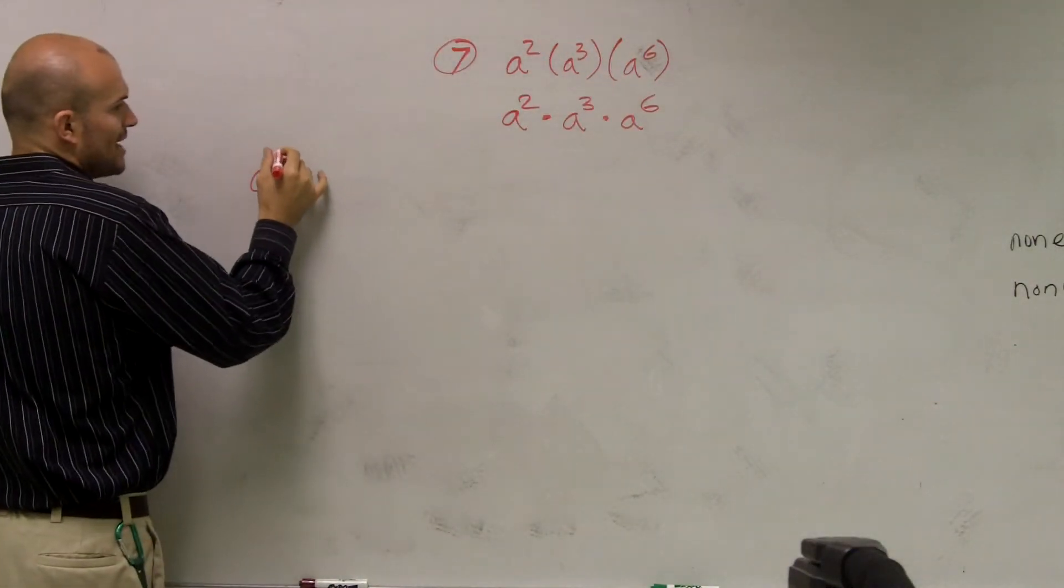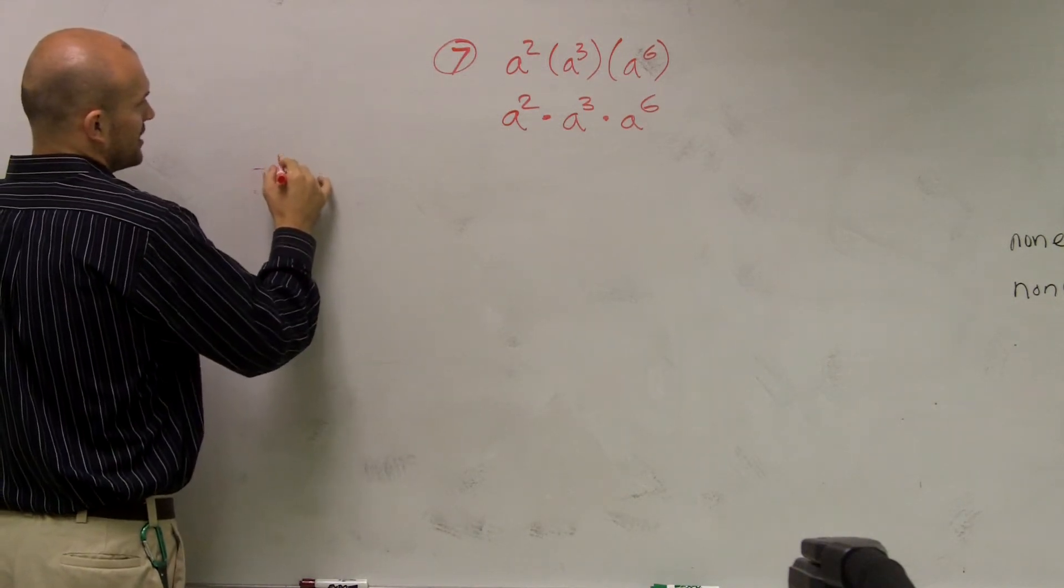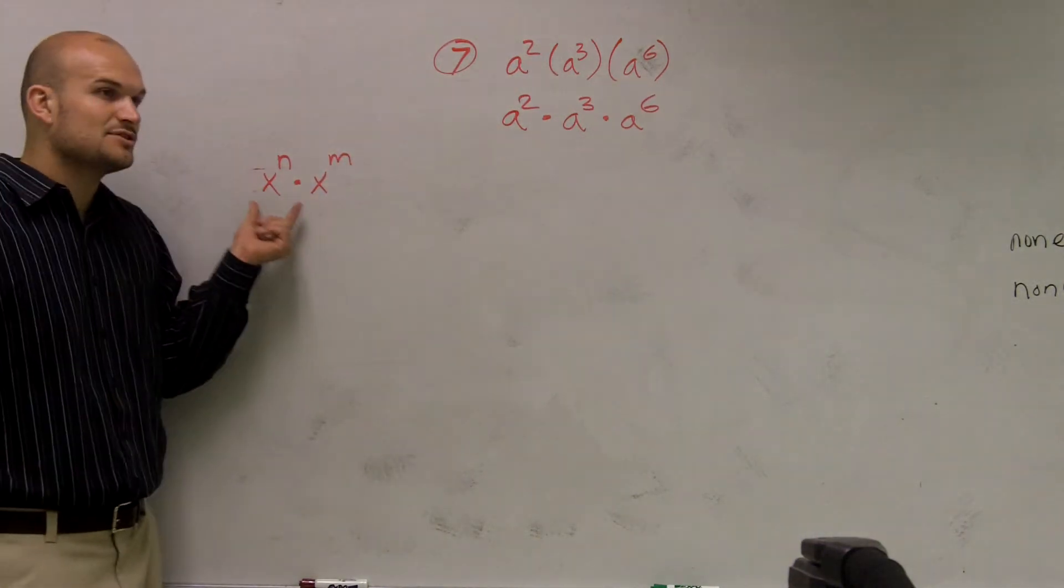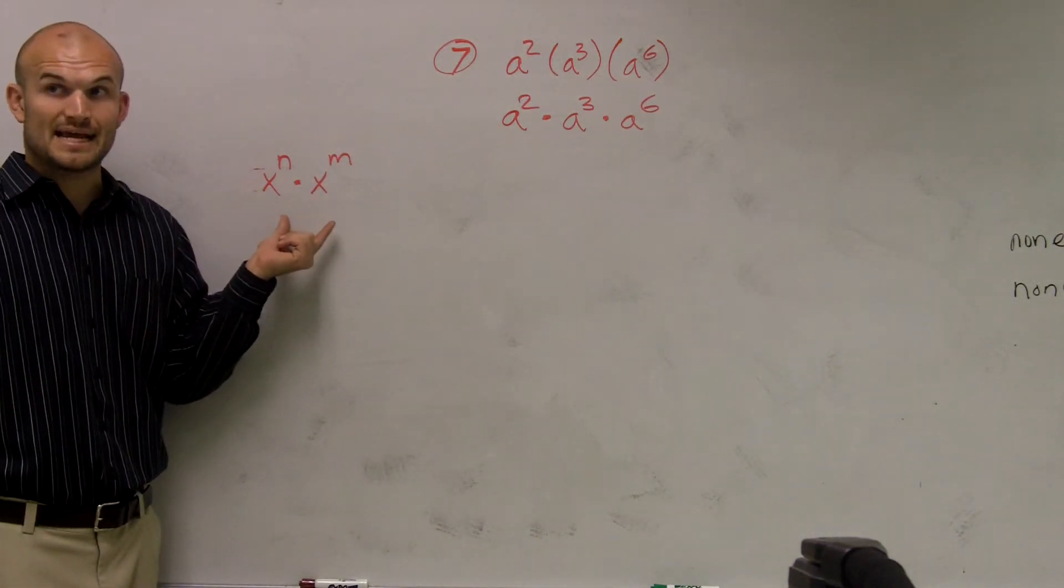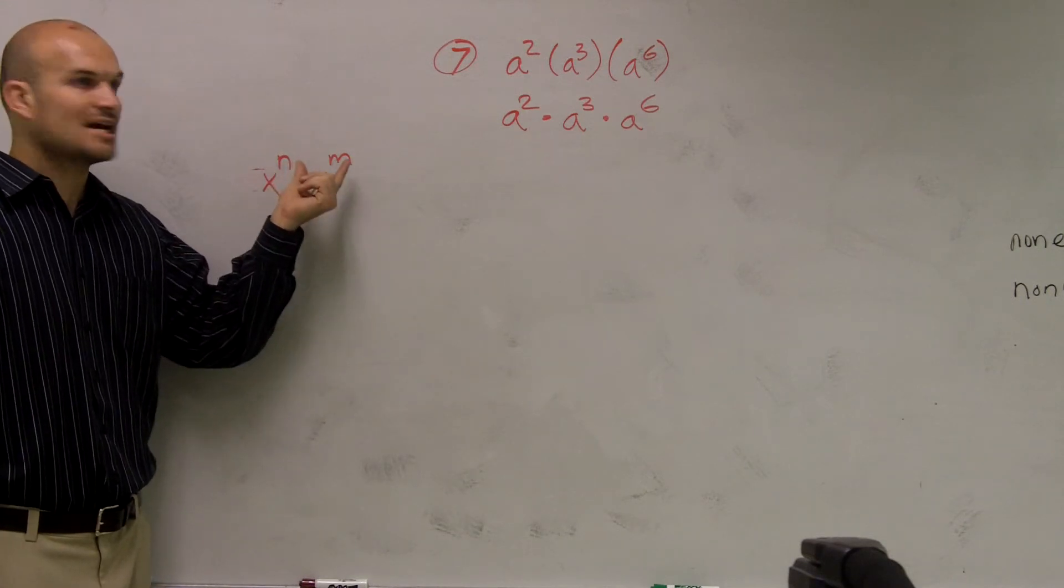If you remember, when we have two exponents, I'll just do x to the n times x to the m. Remember, whenever we have two exponents where the base is the same, all we need to do to multiply them is to add the exponents.